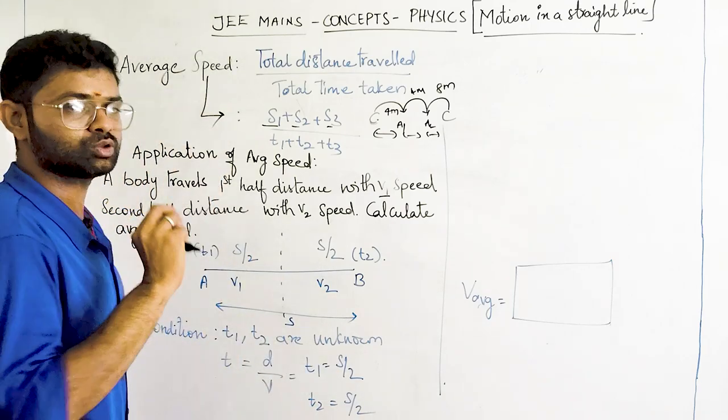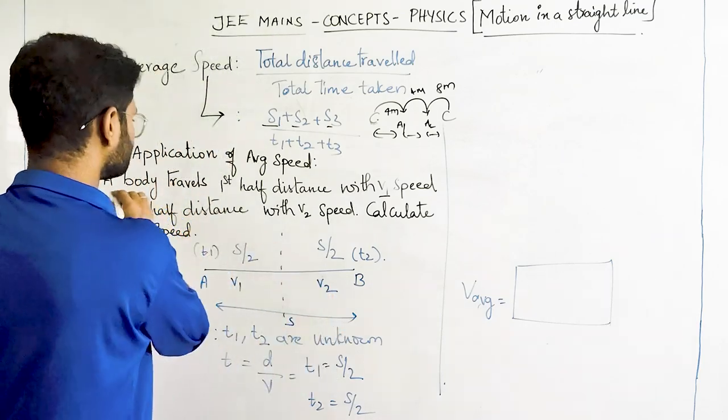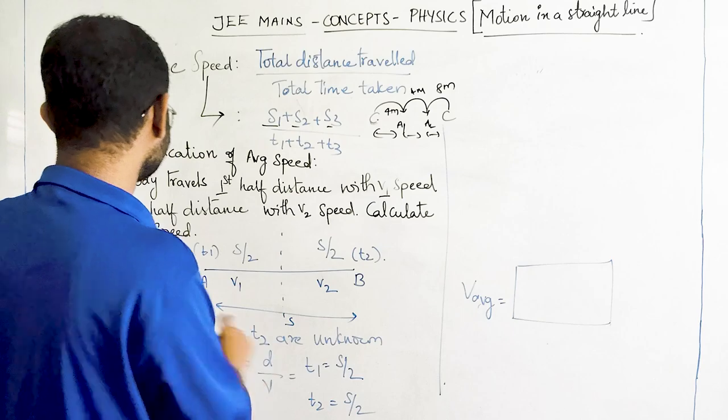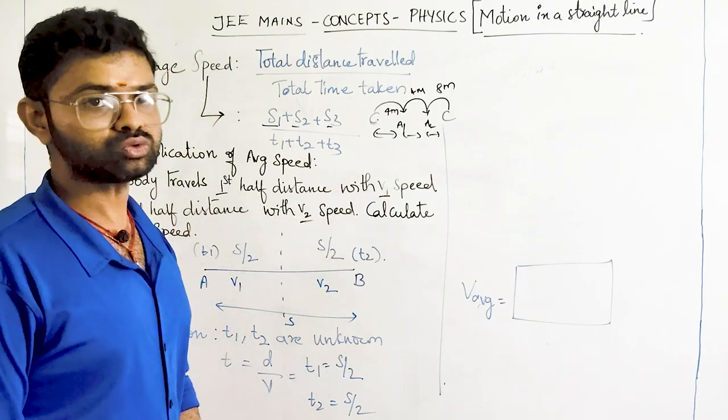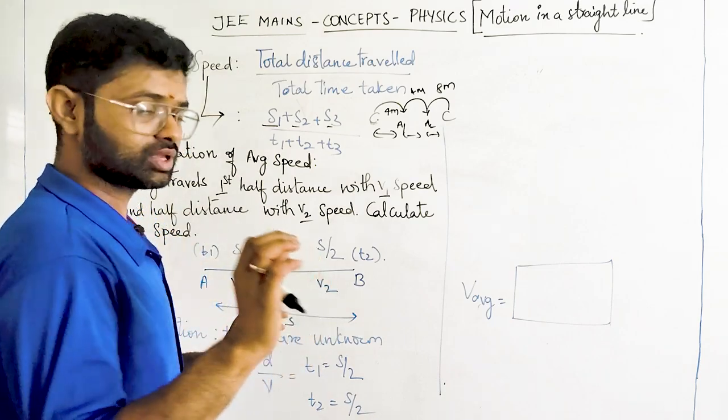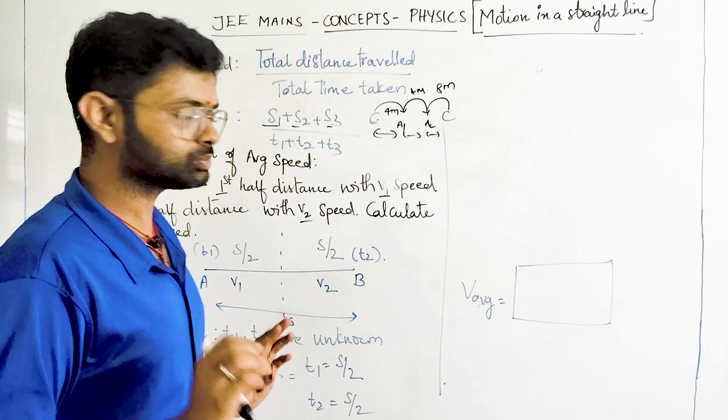So for this let us look at the first application that we have. Very simple application. A body travels the first half distance with V1 speed and second half distance with V2 speed. We have to calculate the average speed.